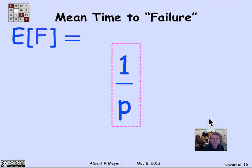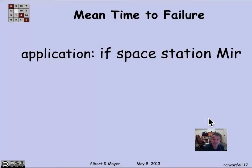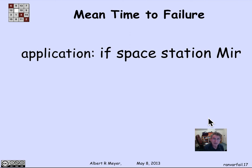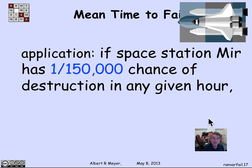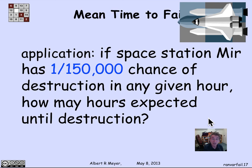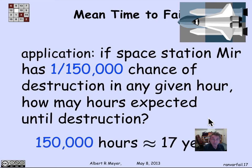As one more example to illustrate the significance of 1 over P: suppose a space station mirror has about a 1 in 150,000 chance of destruction from space junk or a meteor collision in any given hour. How many hours do we expect until destruction? It's 1 over (1/150,000), which equals 150,000 hours — translating to about 17 years.